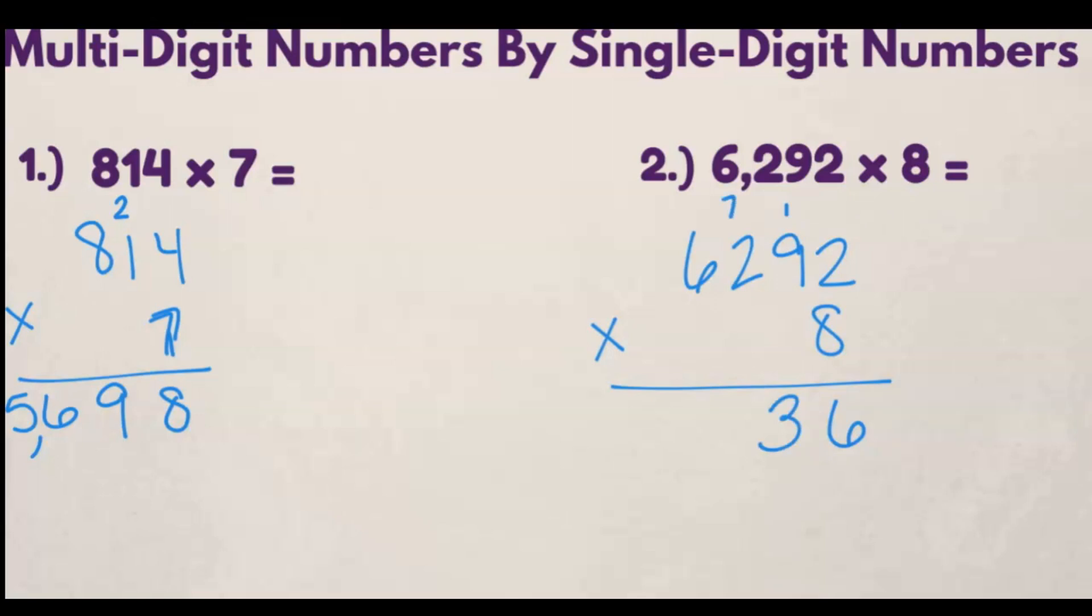8 times 2 is 16, plus 7 is going to be 23. Another 3 down below, we carry the 2.